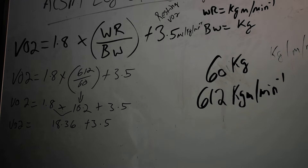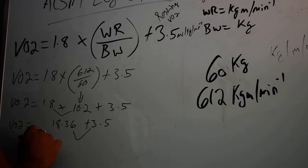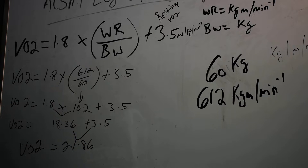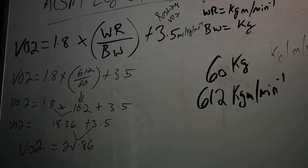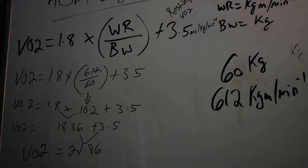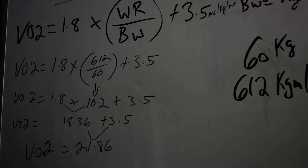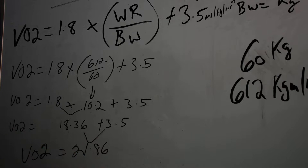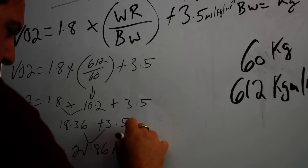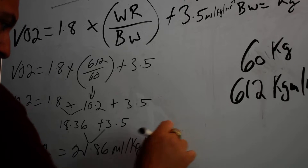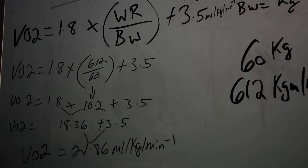1.8 times 10.2 comes out to 18.36. Then we add 3.5 — that's order of operations. Our VO2 comes out to 21.86. An important point I'm very strict about with my students: always put your units — milliliters per kilogram per minute. That's all you have to do for the ACSM leg cycling equation.